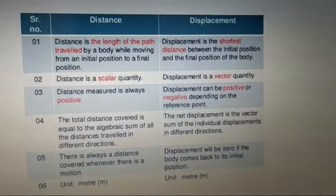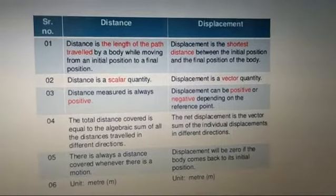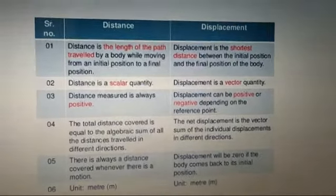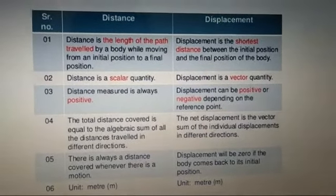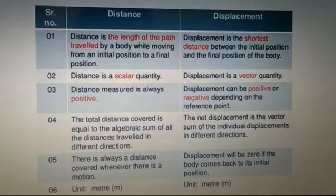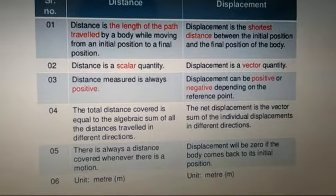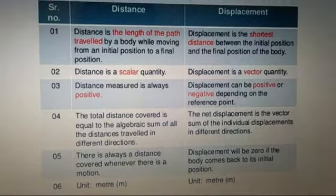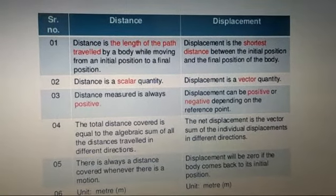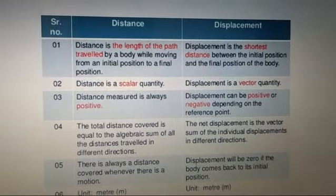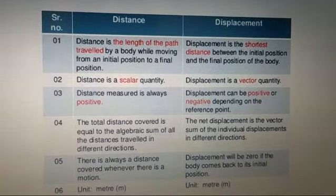Friends, you can note down the differences between distance and displacement. First write the definition, then write distance is a scalar quantity, displacement is a vector quantity. Distance will always be positive. However, displacement can be positive or negative. It can be zero also.